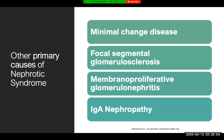Primary diseases leading to nephrotic syndrome include minimal change disease, the most common cause in children; focal segmental glomerulosclerosis, a key cause in adults and currently the most common cause in adults in many parts of the world; membranoproliferative glomerulonephritis; and IgA nephropathy. Each of these will be discussed in separate insta-lectures; this session focuses specifically on membranous nephropathy.